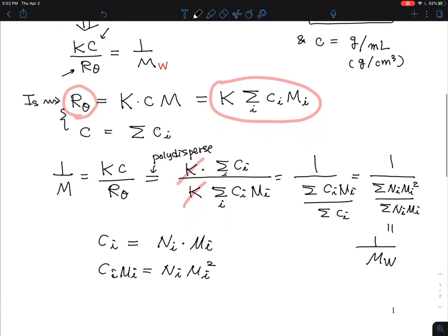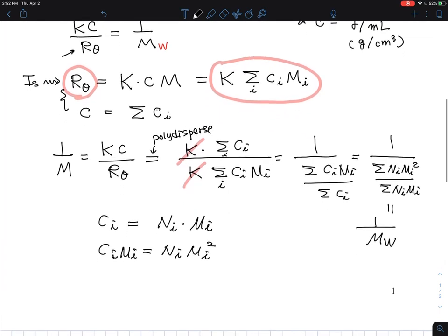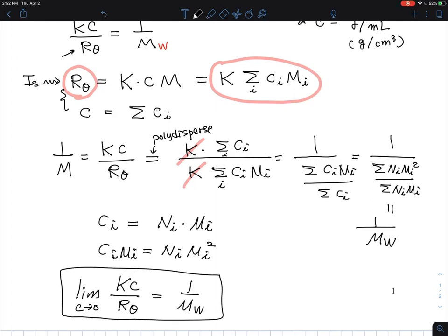So here we show the mathematical details and how we can see that in the limit of concentration going to zero, this plot of Kc over Rayleigh ratio in light scattering gives rise to weight-average molecular weight when polymer samples are polydisperse.